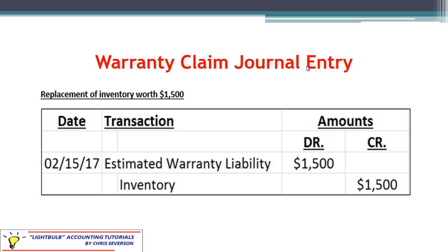The more common situation is where we replace the inventory. Let's say it's still a $1,500 item — perhaps a fairly high-end TV. In this situation we would again debit estimated warranty liability for $1,500 and credit inventory for $1,500, because we are using up the inventory and giving it back to the customer. Notice that inventory was recorded at cost, so regardless of the fact that the item was worth $1,500, it may be something they normally sell for $2,500 or more.